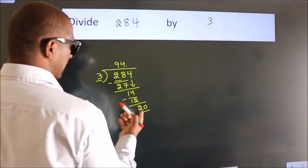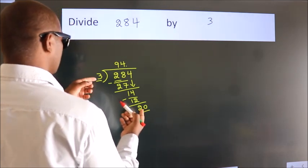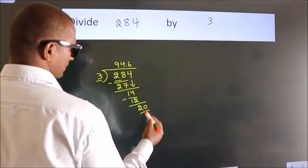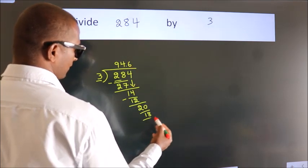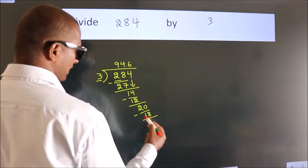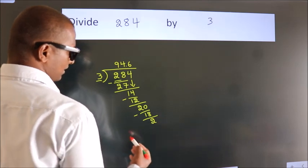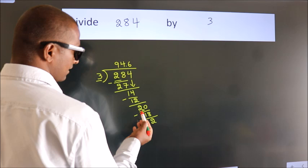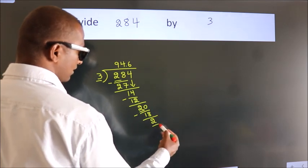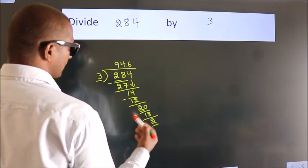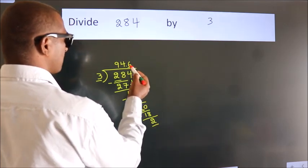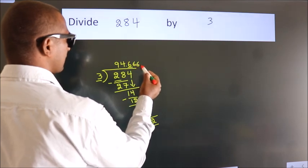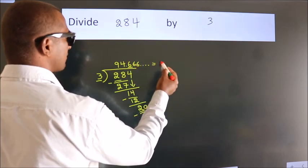A number close to 20 in the 3 table is 3 times 6, which is 18. Now we subtract and get 2. Now you observe: we had 2 here and we got 2 again. That means this number keeps on repeating. So this is our quotient.